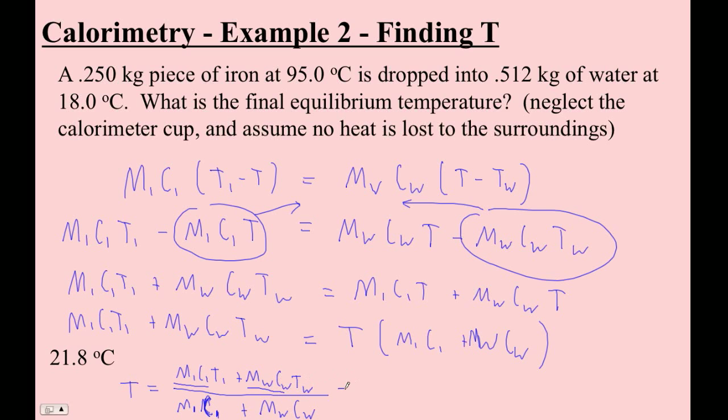And so when I do this, this is going to be 0.250 times, let's see, C of iron is 450, times the original temperature is 95. And they're all, they always end up that way.